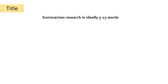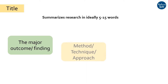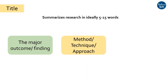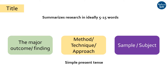A title summarizes the whole paper or thesis in the minimum possible words, ideally ranging from 5 to 15. A title should represent three key aspects of the paper: the major finding or outcome of the research, the method, approach or technique followed, and the sample or subject being studied. All these aspects should be written in the minimum possible words. The title should include words that match the content of the entire paper, which helps readers search your article.